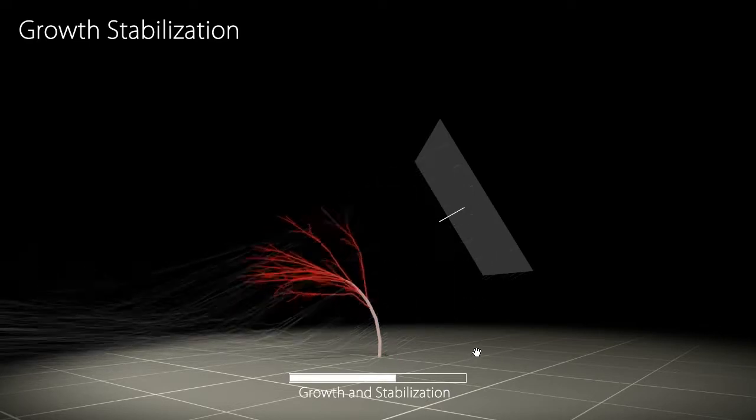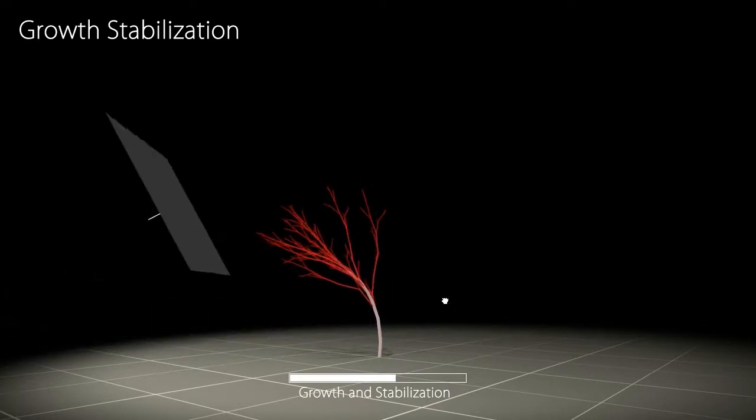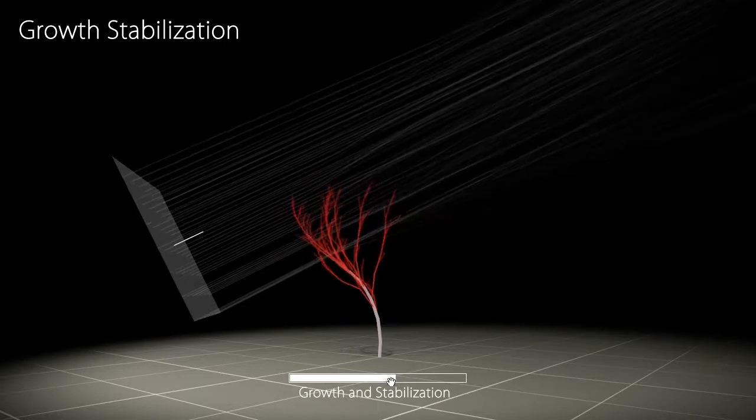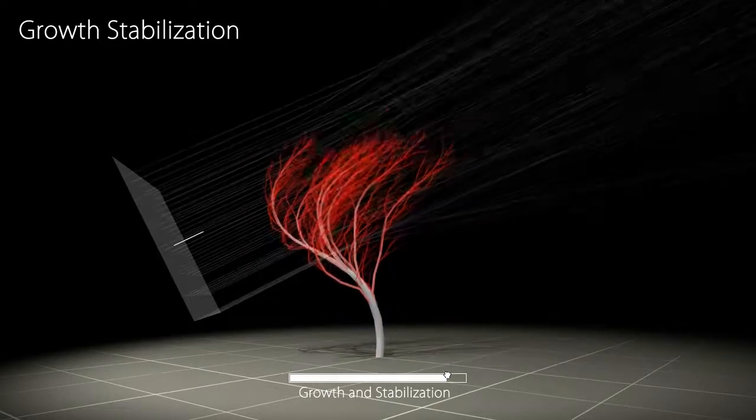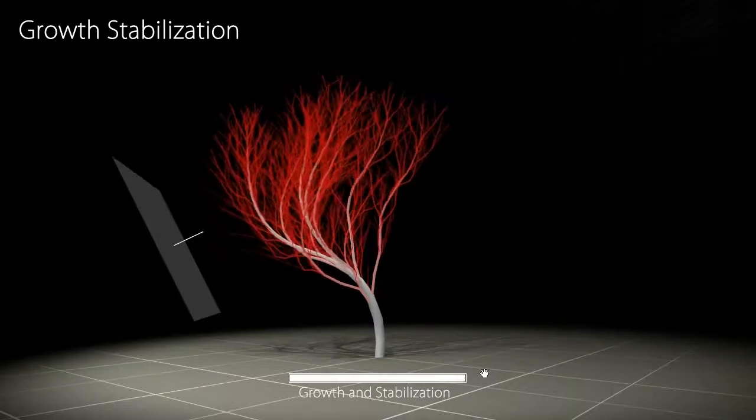The development solidifies the branches and the tree becomes more and more rigid. The younger branches of a given developmental state remain flexible and slowly adjust according to the prevailing wind direction.